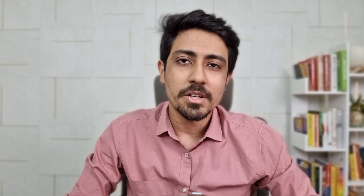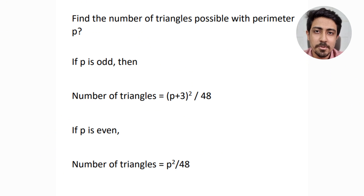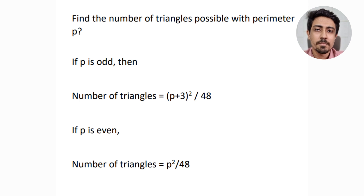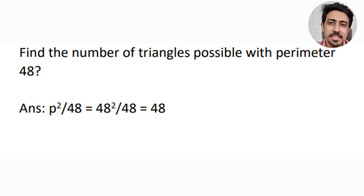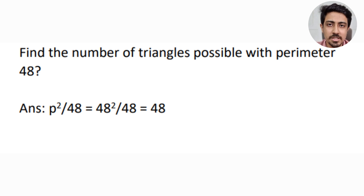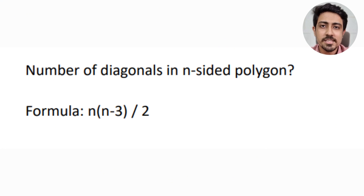Moving to geometry, I'll only cover shortcuts — not theorems like the British Flag Theorem or Apollonius Theorem. A typical problem is: find the number of triangles with integral sides and perimeter p. If p is odd, the formula is (p + 3)² / 48. If p is even, the formula is p² / 48. For example, with p = 48 (even), the answer is 48 triangles.